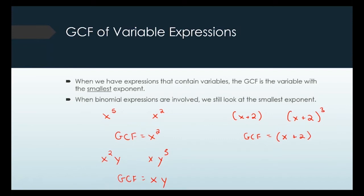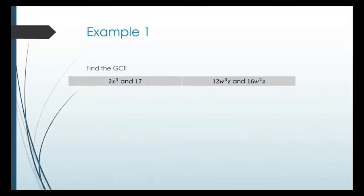Now combining numbers and variables: for 2x cubed and 17, first I look at the numbers. Two is prime and 17 is prime, so they share no common factor other than 1. Then I look at the variables — there's an x cubed but no x in the 17 term, so there's no x in common. These two terms share nothing in common; their GCF is 1.